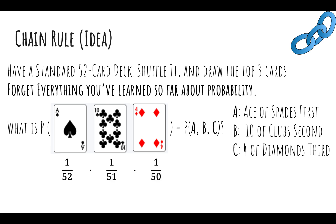Why is that? Well, 1/52 is the probability of getting the ace of spades first. Then 1/51 is the probability that we get the ten of clubs given that we drew the ace of spades, because there are only 51 cards left in the deck. And 1/50 is the probability of C given A and B — the probability of getting the four of diamonds once we've already drawn those two cards, meaning there are only 50 cards left in the deck.